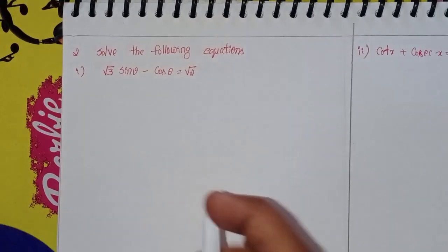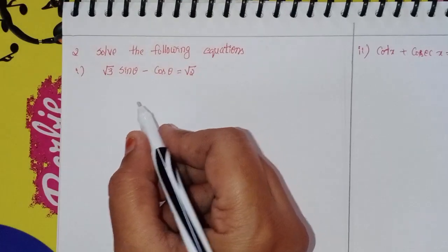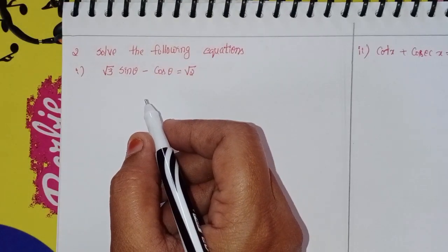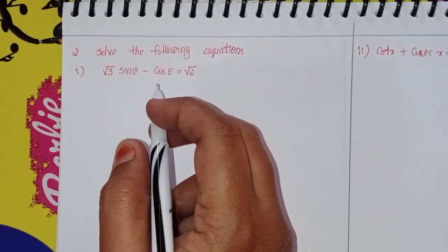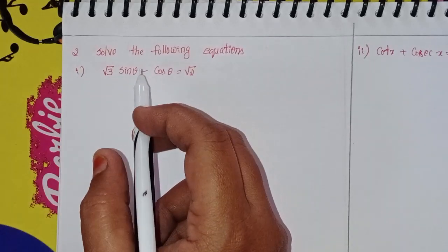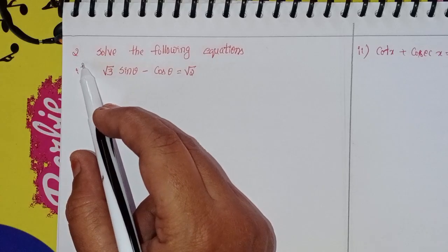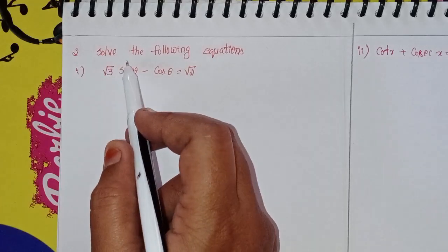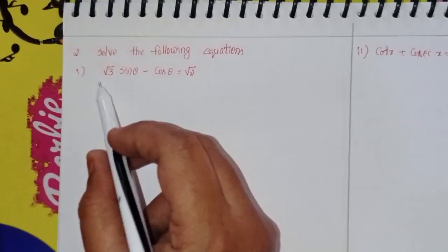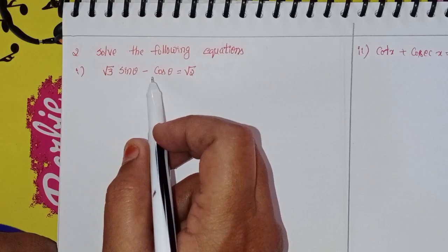Hi viewers, this is Shaheen and welcome to my channel. Today we will discuss Intermediate First Year 1A, Chapter 7: Trigonometric Equations, Exercise 7a, second problem — solve the following equations.